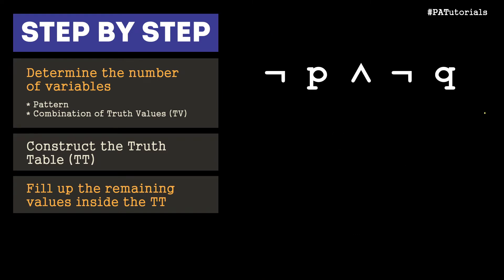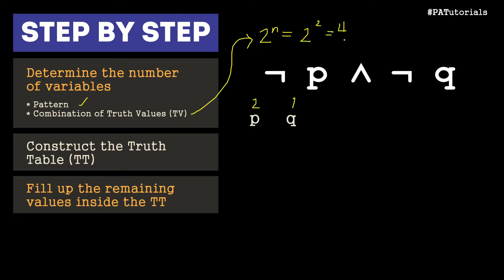Let's move on to our third example: not P and not Q. The first step is to determine the number of variables — we have 2 variables, P and Q. Q is 2 raised to 0, pattern of 1; P is 2 raised to 1, pattern of 2. The combination of truth values is 2 raised to n, which gives 2 raised to 2 equal to 4 combinations of truth values.